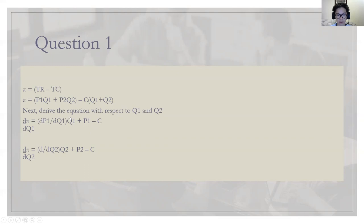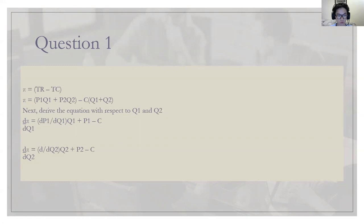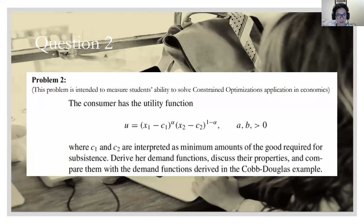Since c is constant, the only effective variables are p1 and q1. The question imposes a quota on country two, meaning q2 is affected, but since there is no variable q2 whatsoever in the optimization of q1, we can conclude it will not affect q1 or p1. Since cost is constant and there is no q2 in the equation, q1 and p1 will remain the same.